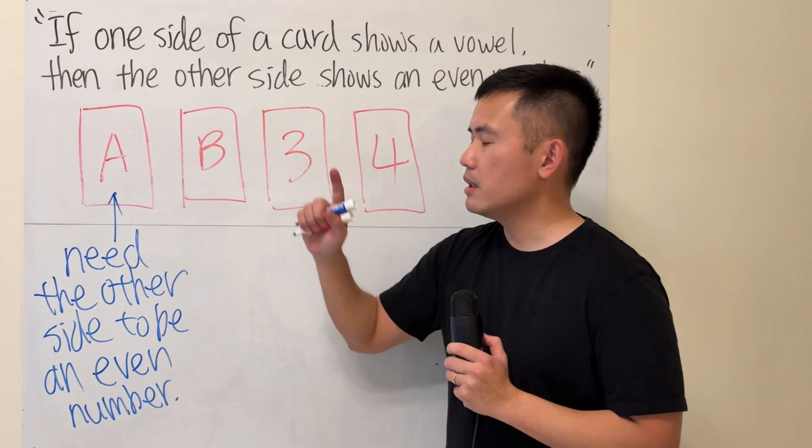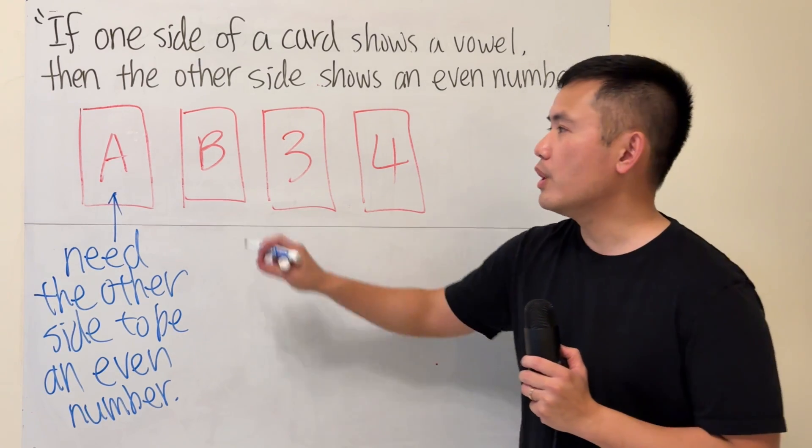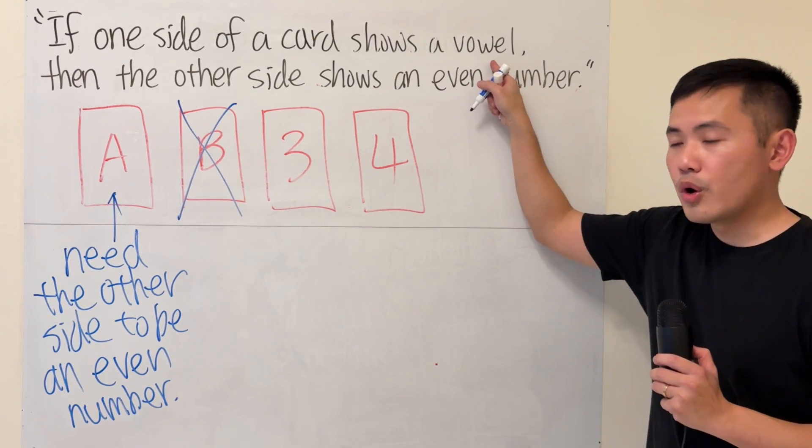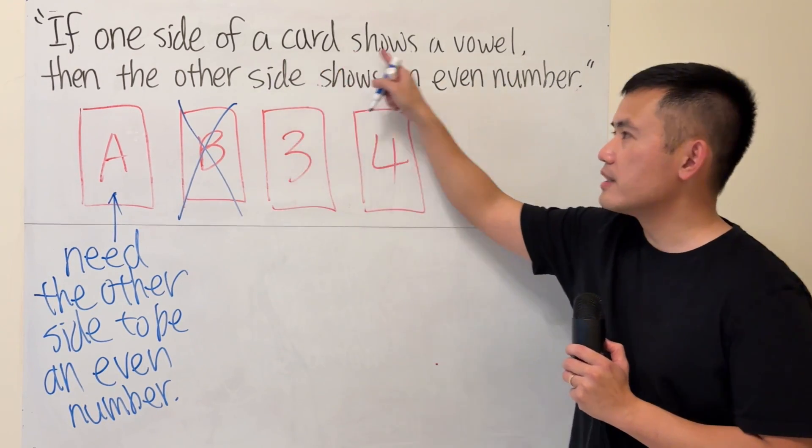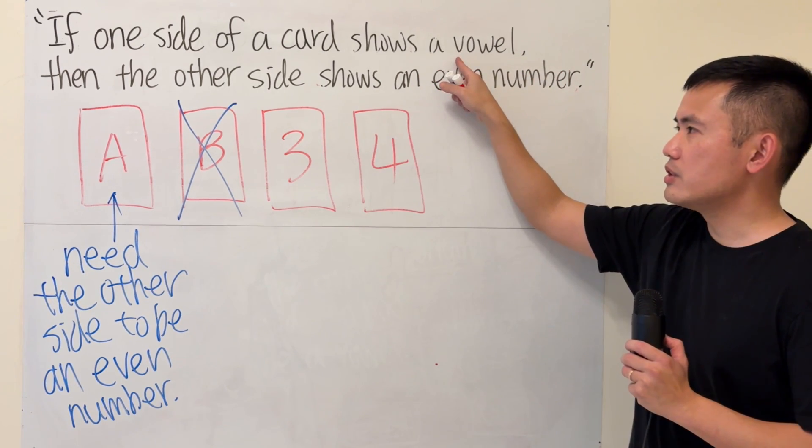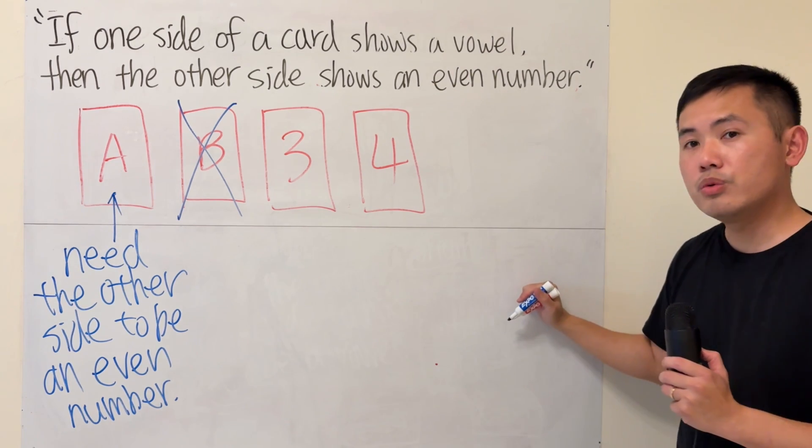Moving on to B, do we have to check the second card? Well, in fact, we don't, because B is not a vowel. So this card does not satisfy the condition, so we don't care about what will happen to the other side. If it doesn't satisfy the condition, it doesn't matter what happens to the conclusion.